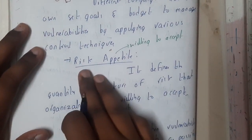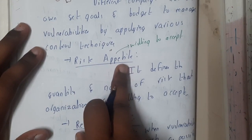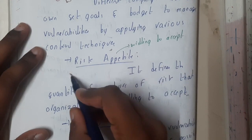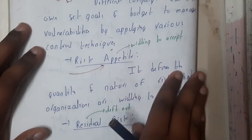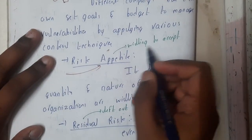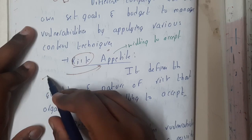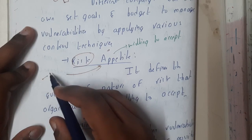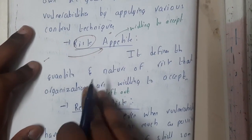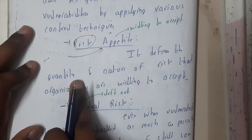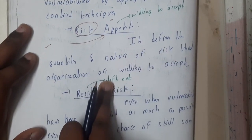We have a terminology called risk appetite. Appetite means what you are willing to accept — just like food appetite is what you accept in terms of food. Similarly, risk appetite is what you are willing to accept in terms of risk. If a particular risk has a very low occurrence value, like 0.001, you can just approve it. That is risk appetite.